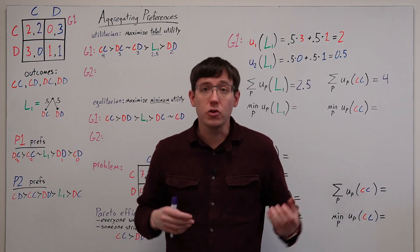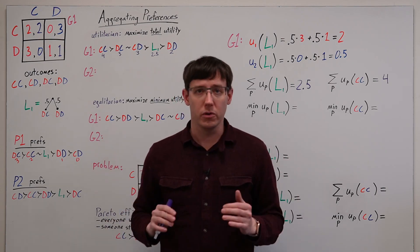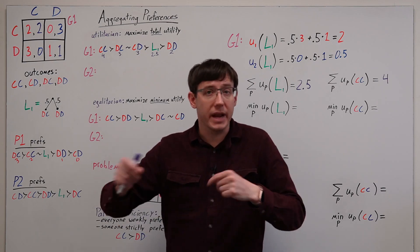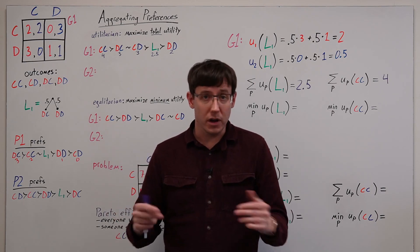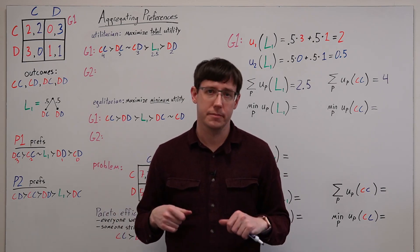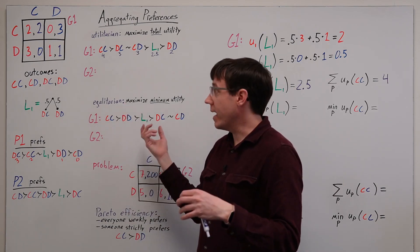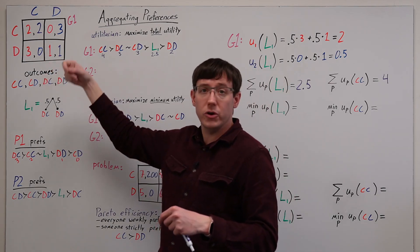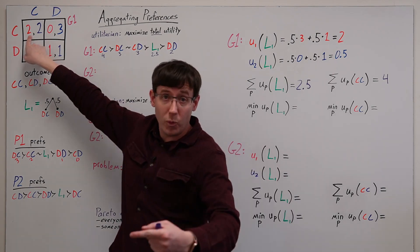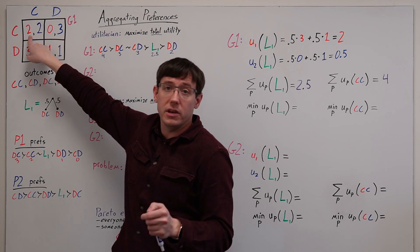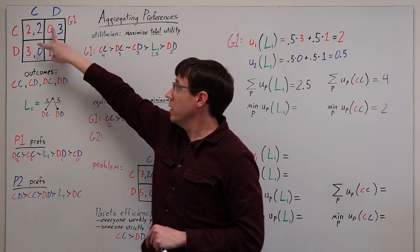But the idea of maximizing total utility has obvious flaws that philosophers have long argued over. And so maybe a better approach to comparing outcomes would be to instead try to maximize the utility of the player who is worst off, which then leads us to the egalitarian criterion, where we will rank the outcomes by which one has the higher utility for the player who does the worst in that outcome. In the outcome where both cooperate, the minimum payoff is 2, while for the other outcomes, we have a minimum payoff of 1 or 0.